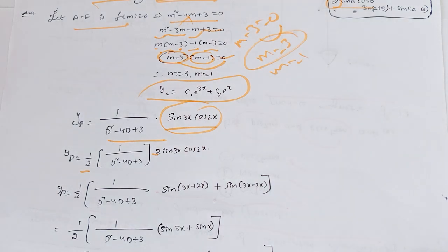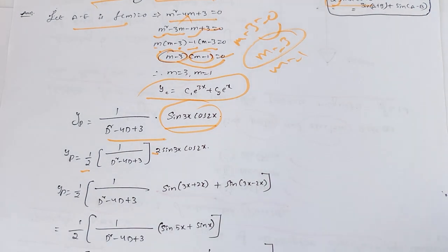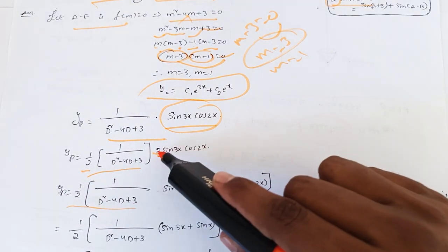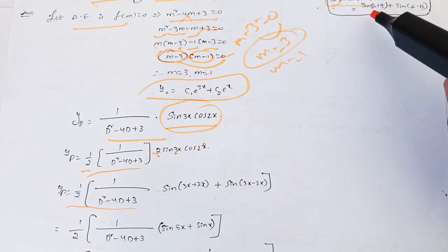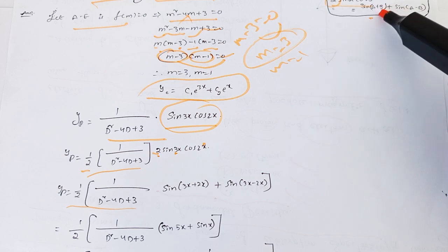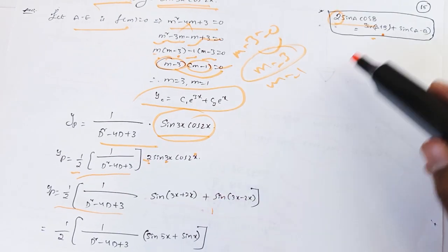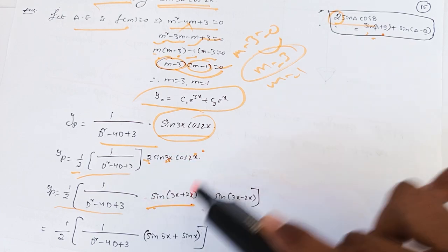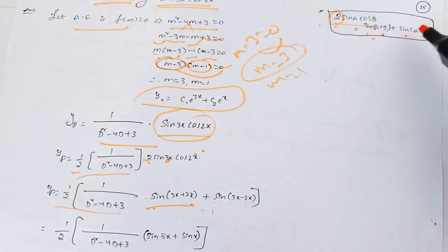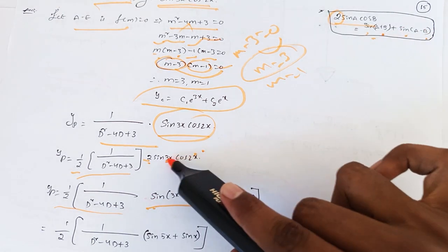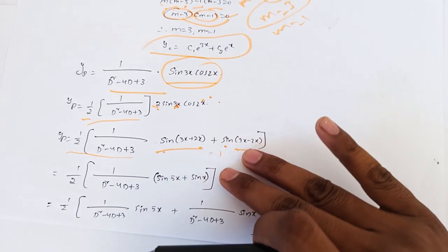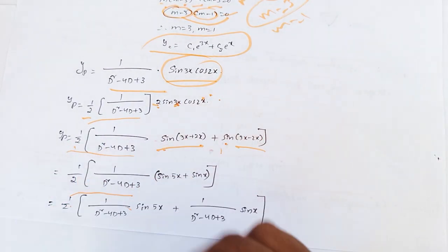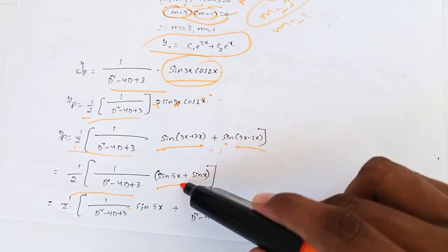Now apply the trigonometric product formula: 2 sin A cos B equals sin(A+B) plus sin(A−B). So 2 sin 3x cos 2x gives sin(3x+2x) plus sin(3x−2x), which is sin 5x plus sin x.